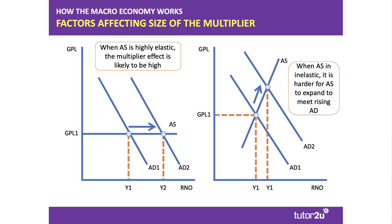The multiplier effect is smaller when aggregate supply is inelastic. Here I've drawn linear aggregate supply curves. On the left-hand side, aggregate supply is highly elastic — lots of spare capacity in the economy, high unemployment for example — so the multiplier effect is likely to be high following an increase in aggregate demand. Whereas on the right-hand side, aggregate supply is inelastic, and it's harder for aggregate supply to expand to meet an increase in demand following a stimulus.